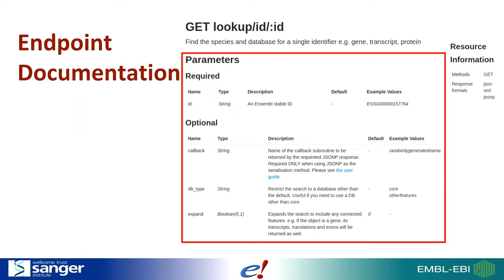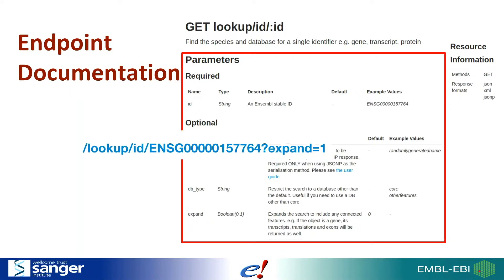There's a list of parameters the endpoint takes, grouped into either required or optional parameters. It also says what type each parameter is — a string, a boolean, etc. — and gives some examples of possible values. If the parameter isn't in the template at the top, it's added on to the end of the URL in standard HTTP fashion after a question mark, as seen in this URL using the expand option set to true.